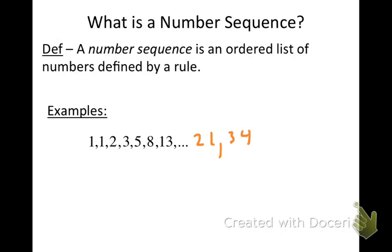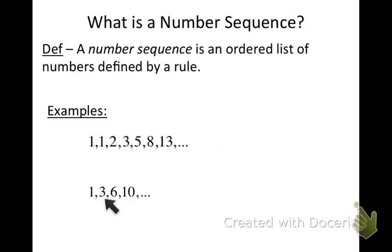Another sequence is this: check out the numbers 1, 3, 6, 10. We could describe this sequence using rules of various types. The pattern you would probably come up with is that we add 2 to get the second term, then add 3 to get the third term, add 4 to get the fourth term, add 5 to get the fifth term — so the fifth term would be 15. You're adding consecutive integers to create the terms.